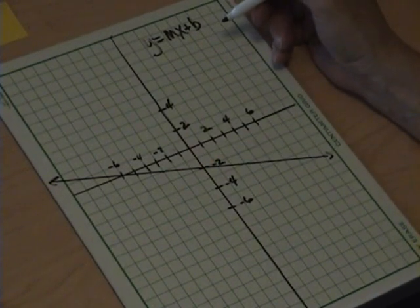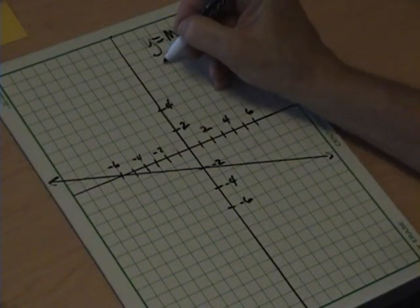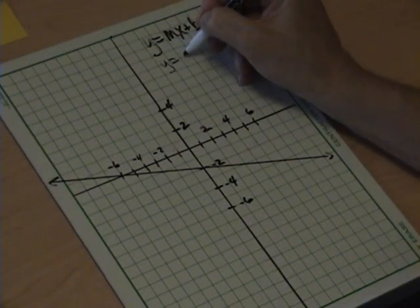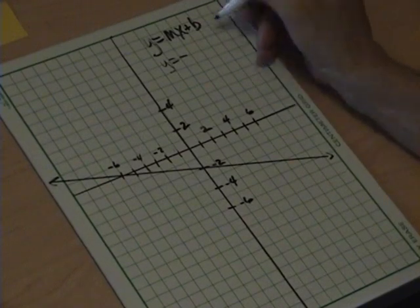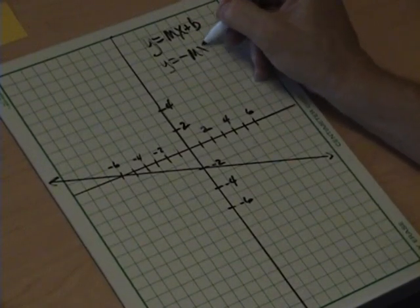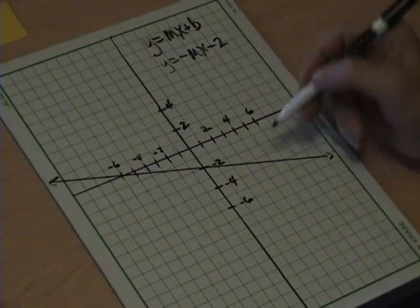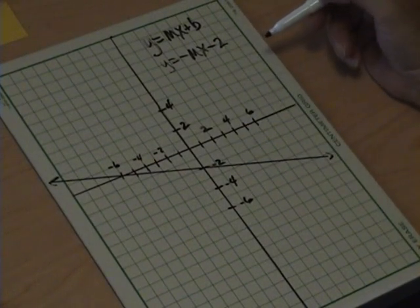So, the first thing we know is our equation now looks like this. That's y is equal to some sort of negative slope, negative mx, and it's minus 2 because it goes through the negative 2.